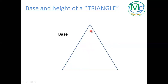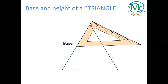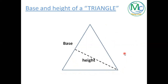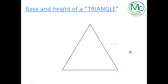Now, what if I change my base? I'm going to place my set square according to the new base, so the base of the set square should be over the base of the triangle. I will start sliding the set square and keep an eye on the height side — once it touches a vertex, I will stop. This vertex has been touched, so using my pencil I will draw the line. The height for this base is this.